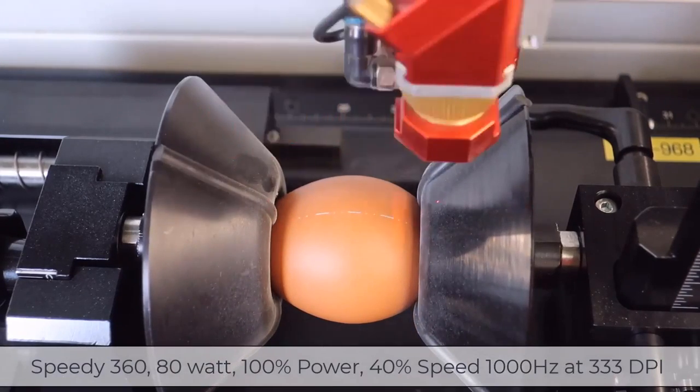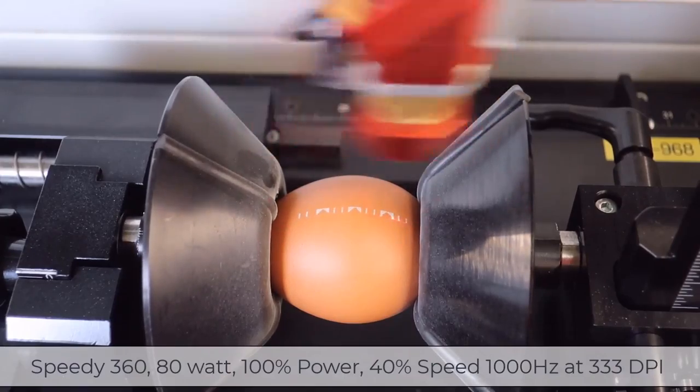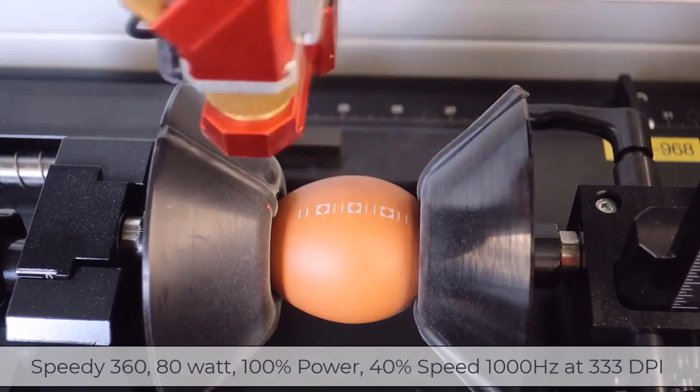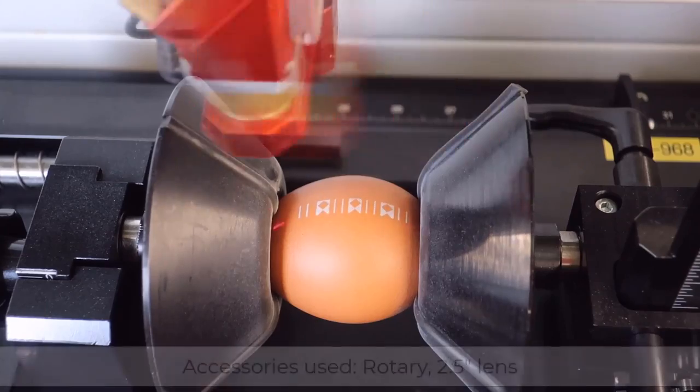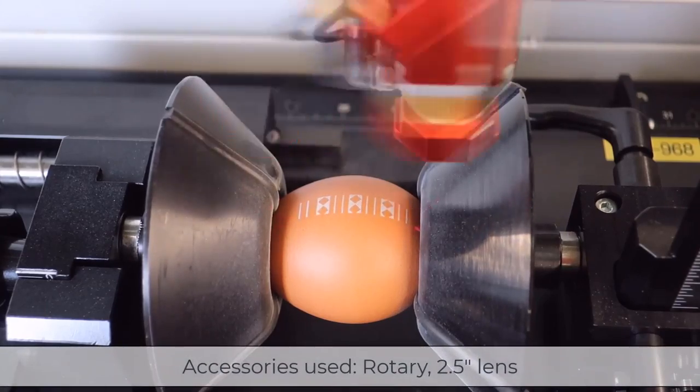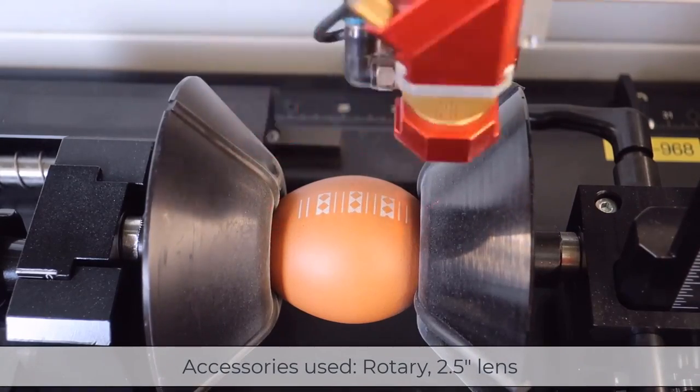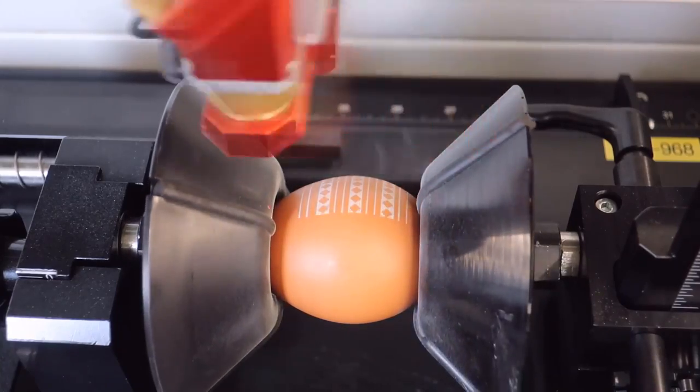Alright let's go ahead and get started. We're running a speedy 360 at 100% power and 40 speed with 1000 Hertz at 333 DPI. We're going to be using a rotary and a two and a half inch lens in order that we can cleanly engrave the surface of our egg while clearing the cones of the rotary.